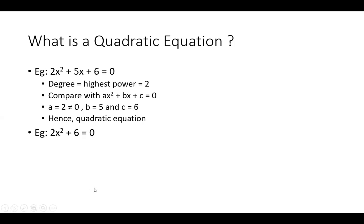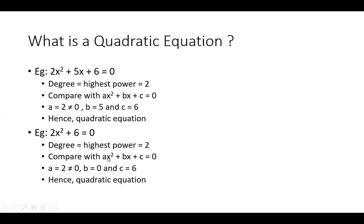The next example is 2x² + x = 0. This is also a quadratic equation. Let's compare it with ax² + bx + c = 0. Here a value is 2. B is the coefficient of x, and the coefficient of x is not equal to 0.